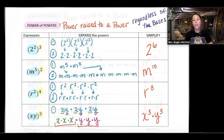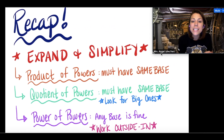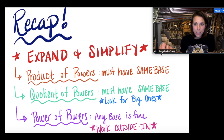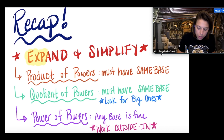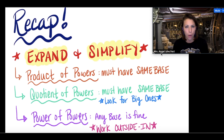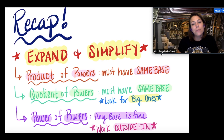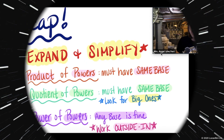To recap: whenever you're dealing with properties of exponents, your two steps are to expand and simplify. Simplify means to write it as a single power — that doesn't mean actually doing the multiplication. Just take that messy power expression and write it as one single power. That's it for today's lesson.